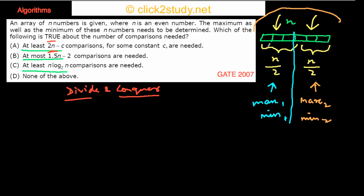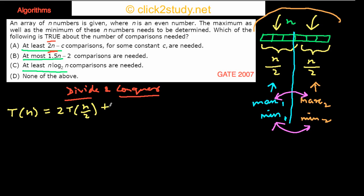To find the max and min for the complete array, you compare max1 with max2 — the greater of the two is the overall maximum — and you compare min1 with min2 — the lesser of the two is the overall minimum. That's two additional comparisons in the merge step. So the recurrence relation is T(n) = 2·T(n/2) + 2.